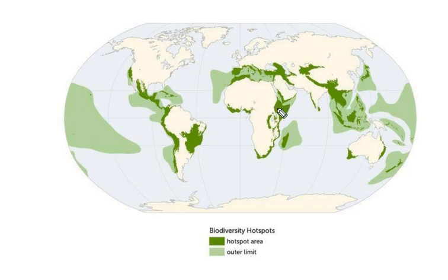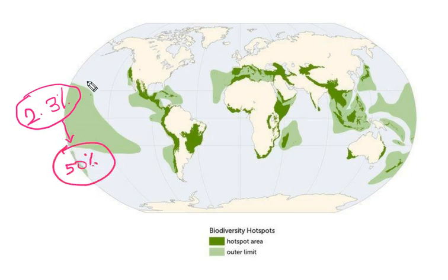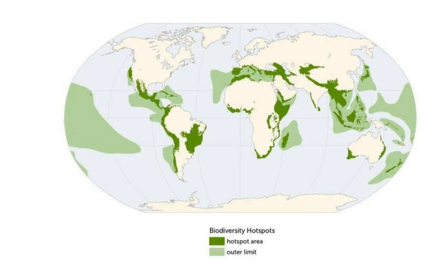Just look at the image. The green colour shows biodiversity hotspots in the world. The biodiversity hotspots represent just 2.3% of the earth's surface, but they have up to 50% of the organisms. Now you can understand the importance of biodiversity hotspots.